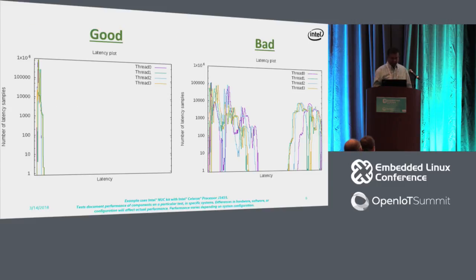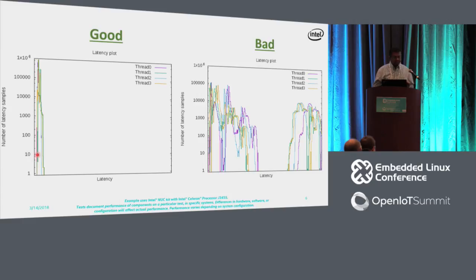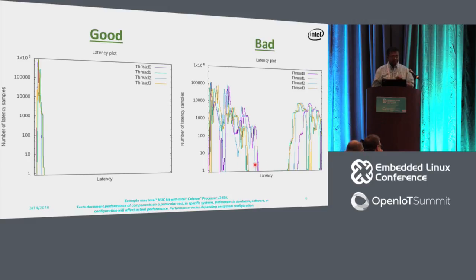These graphs are generated from histograms using a tool called cyclic test. On the left-hand side, the x-axis is latency and the y-axis is number of samples. On the left, there is some latency but it is fixed and consistent — that is deterministic. In a real-time application, we can budget time and compensate for it. On the right-hand side, the latency is jumping all over the place, making it very difficult to find solutions. The right-hand graph has deep C-states in play; the left-hand side has been tuned to block deep C-states.